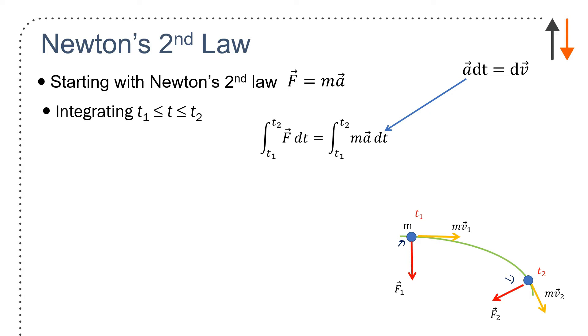And if you do that, you can say f dt from t1 to t2 is t1, t2, m a dt. And recognize that a dt is dv.